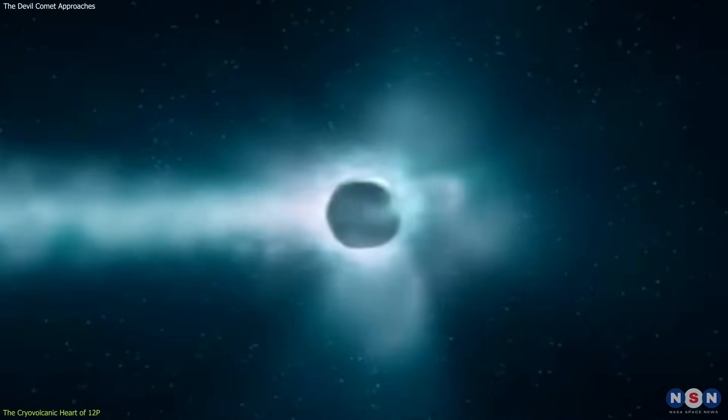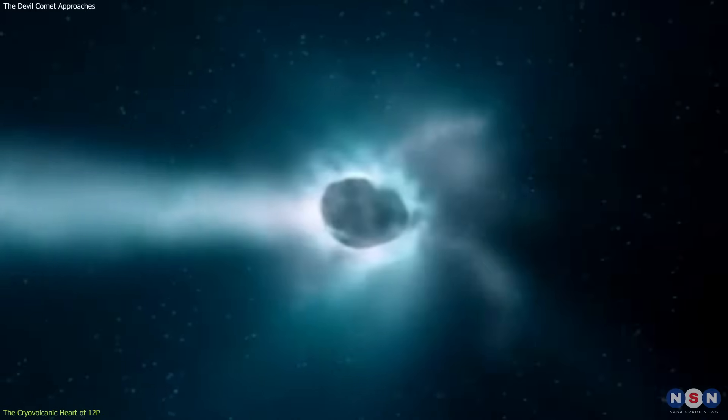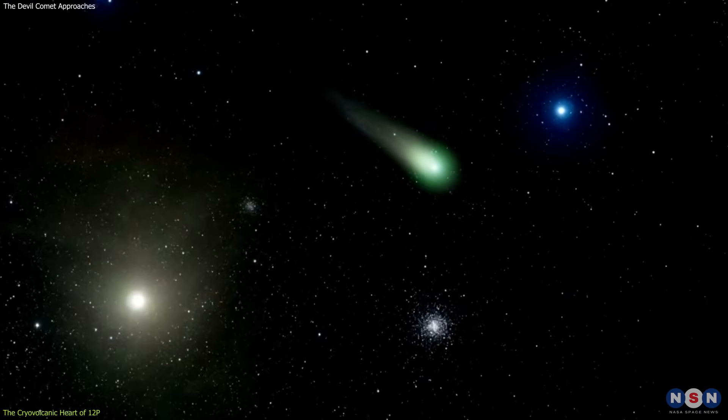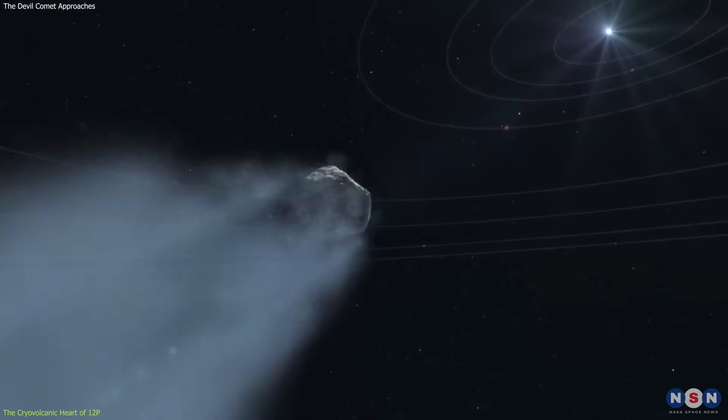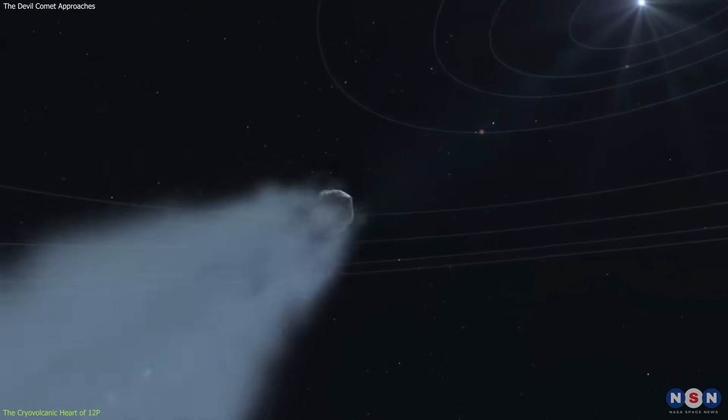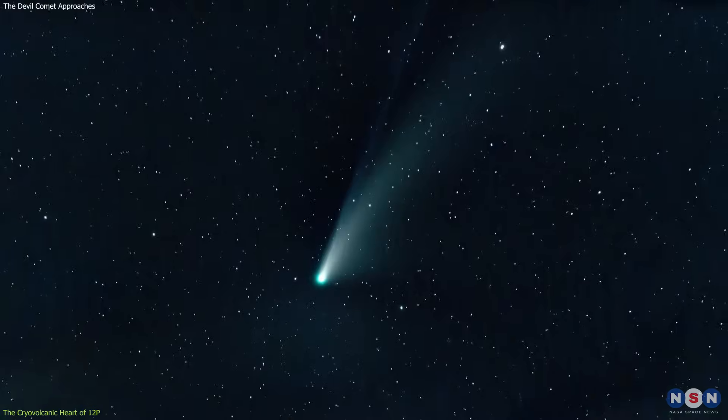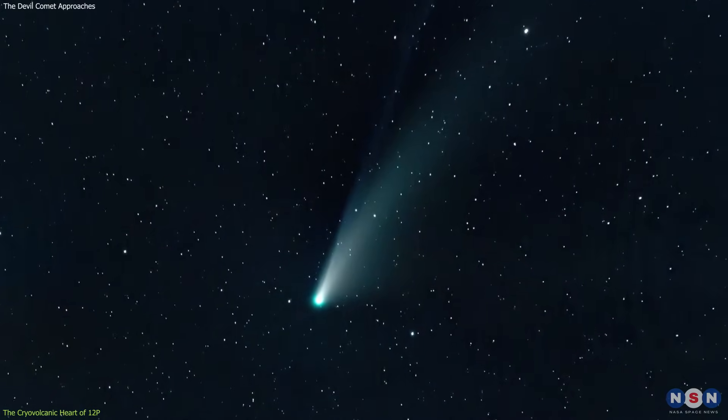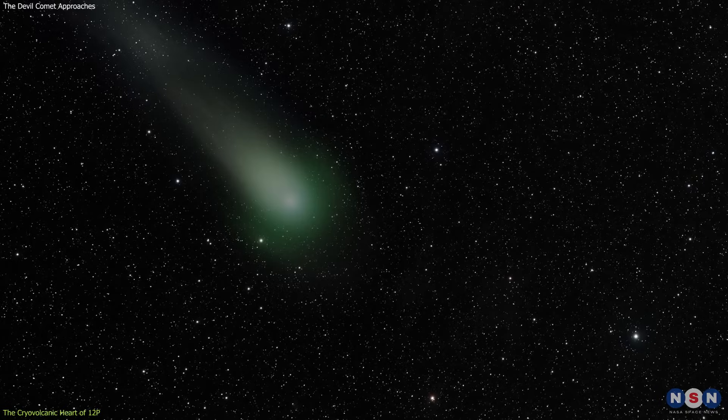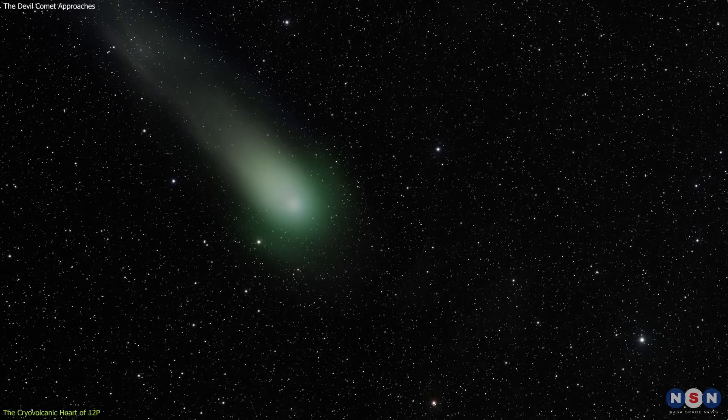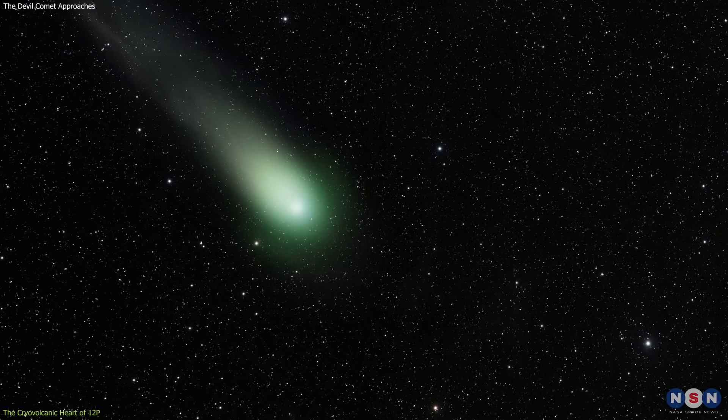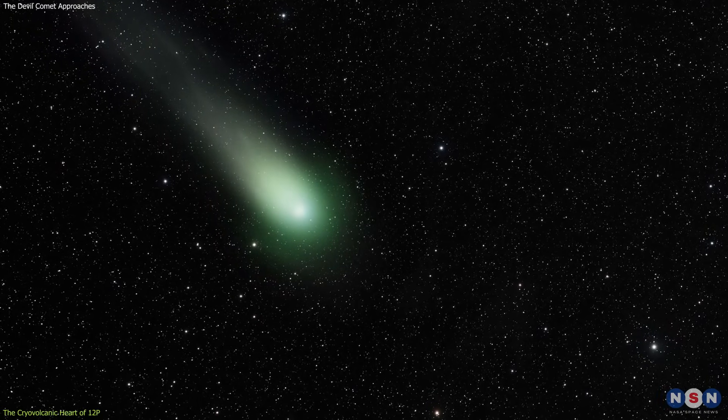The consequences of these eruptions are both spectacular and scientifically intriguing. Each outburst significantly expands the comet's coma, a cloud of gas and dust that envelops its nucleus. This expansion is not just a mere increase in size. It's a transformation that temporarily amplifies the comet's brightness, making it a more prominent feature in our night sky.